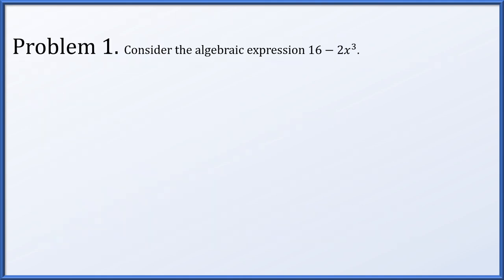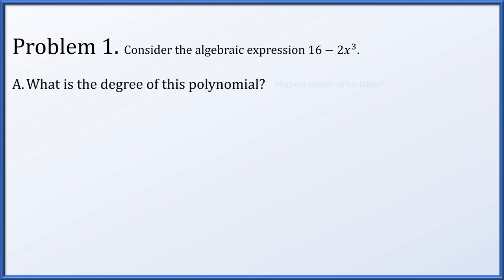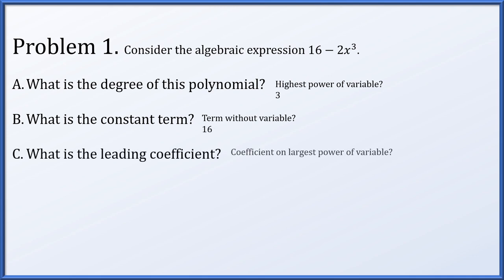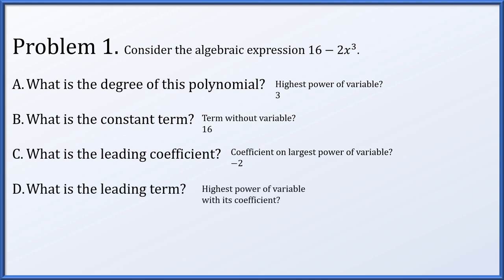For problem one, we consider the algebraic expression 16 minus 2x cubed. The degree of a polynomial is its highest power — we see x cubed, so the highest power is 3, making it degree 3. The constant term is 16, the term with no variable. The leading coefficient is negative 2, the coefficient on the largest power x cubed. The leading term is negative 2x cubed.